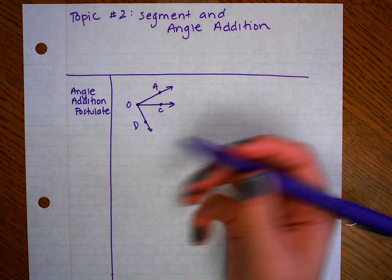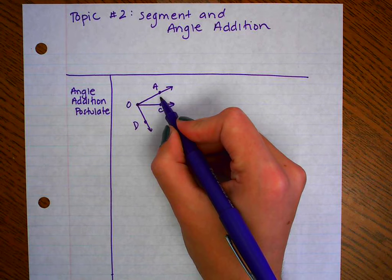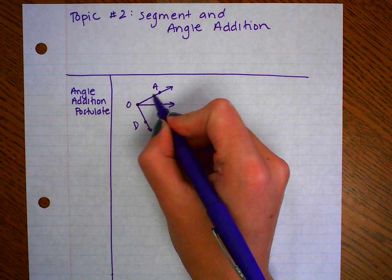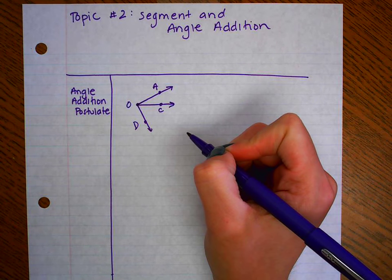And what the angle addition postulate says is, if I know the measure of this angle and I know the measure of this angle, to figure out the measure of the big angle, angle AOD, all I need to do is add those together.